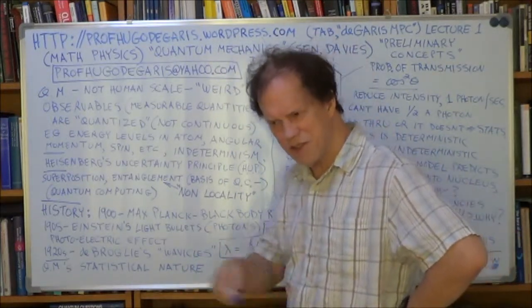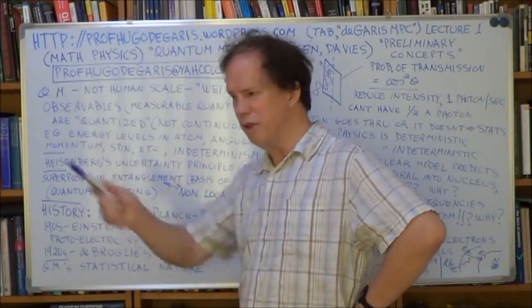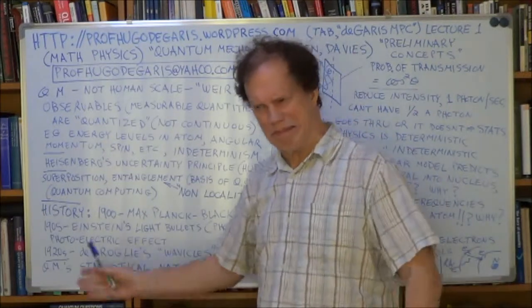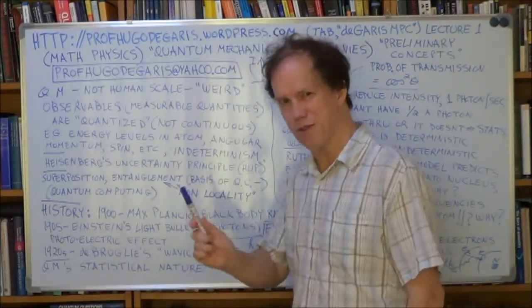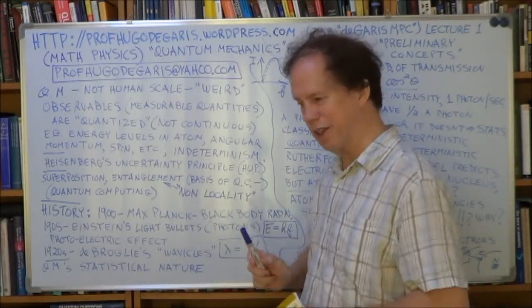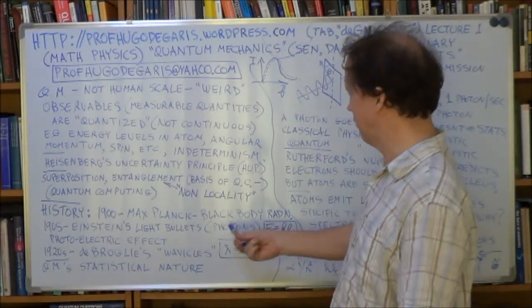It was so counterintuitive. Time changes if you're moving relative to somebody else, mass changes, and lengths shrink, and a lot of physicists couldn't buy that. They rejected giving him a Nobel Prize for his relativity, but they did give him one for this.